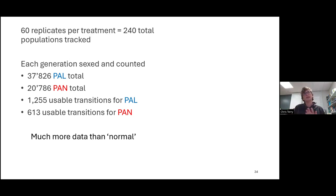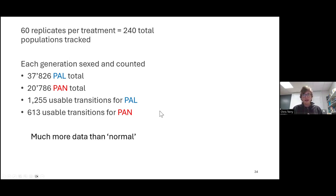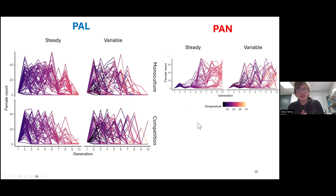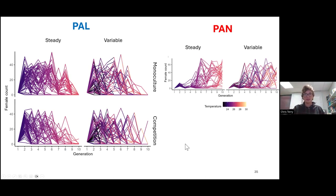The really key number is the number of usable transitions I had — basically low thousands of total transitions from some number of flies to another number of flies that might be zero. This lets me fit really quite a lot. There's fairly strong demographic stochasticity in these tiny vials, I don't offer any possibility of recolonization, and I don't have any dispersal dynamics. This is roughly what the data looks like — just the counts of the females. There's lots of variation on their route to extinction, but by generation 10, essentially all the populations of polydifrons were extinct, with wild fluctuations throughout.